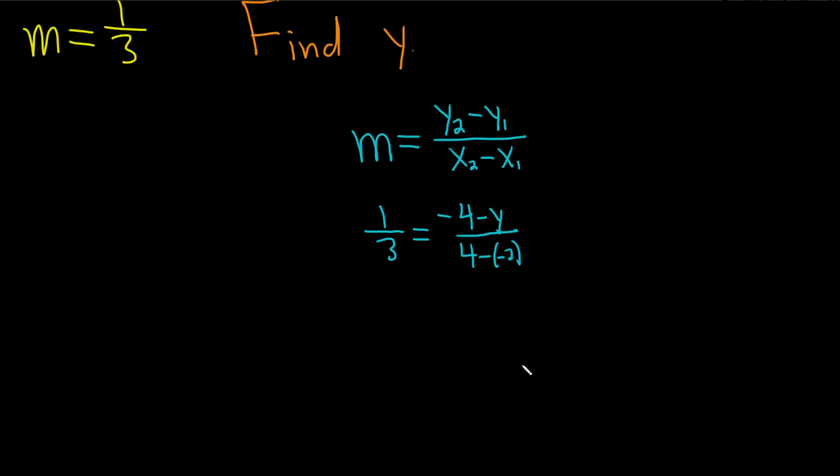All right, let's keep going. So this is 1 over 3 equals negative 4 minus y over... and then this is really 4 plus 2, because it turns into a plus, because there's two negatives, so it's 6.